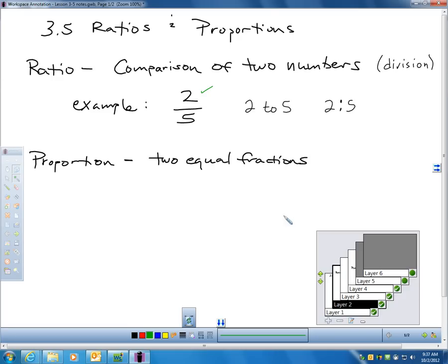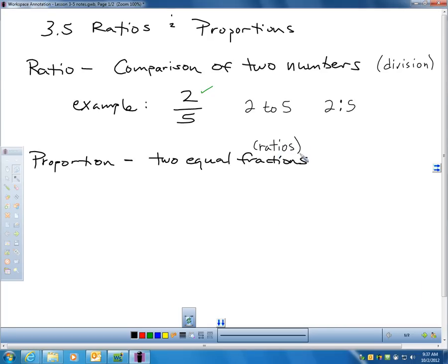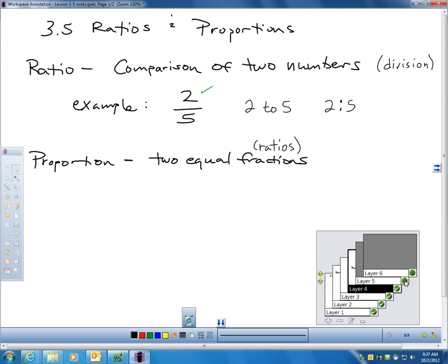Another vocabulary word is proportion that we need to know. A proportion is simply two fractions that are equal. A proportion is a statement that two equal fractions or actually equal ratios. Like here would be a simple proportion that's true. One half equals five tenths. I think you probably know a half and five tenths are the same thing. This would be an example of a proportion.